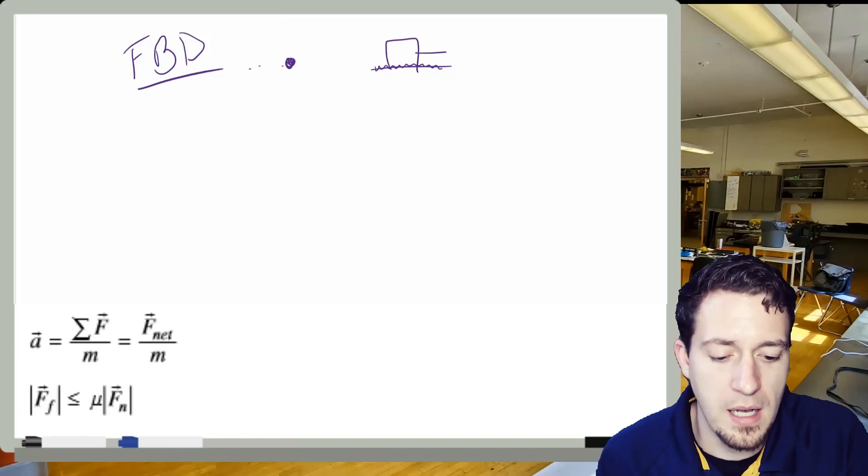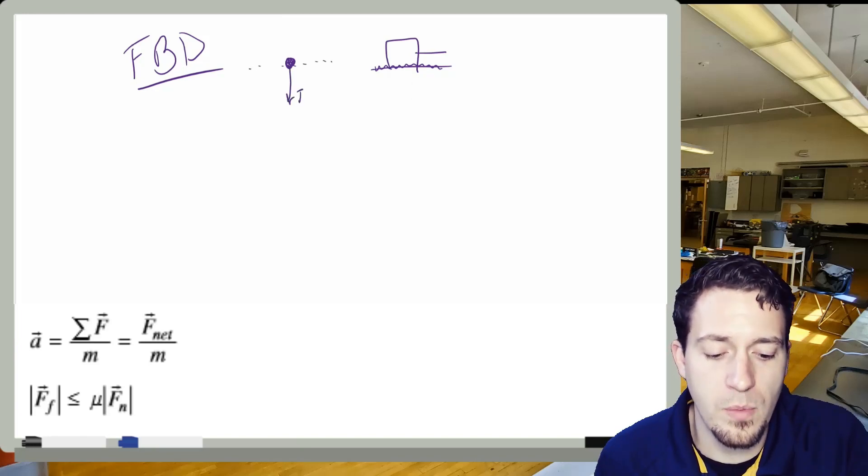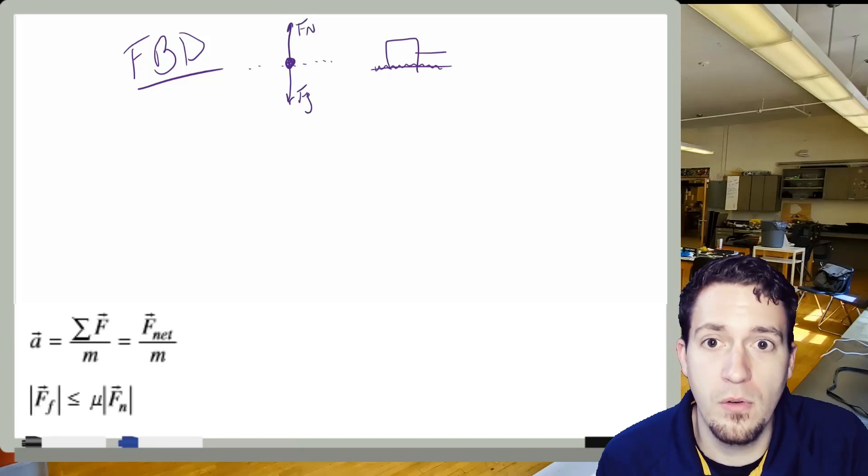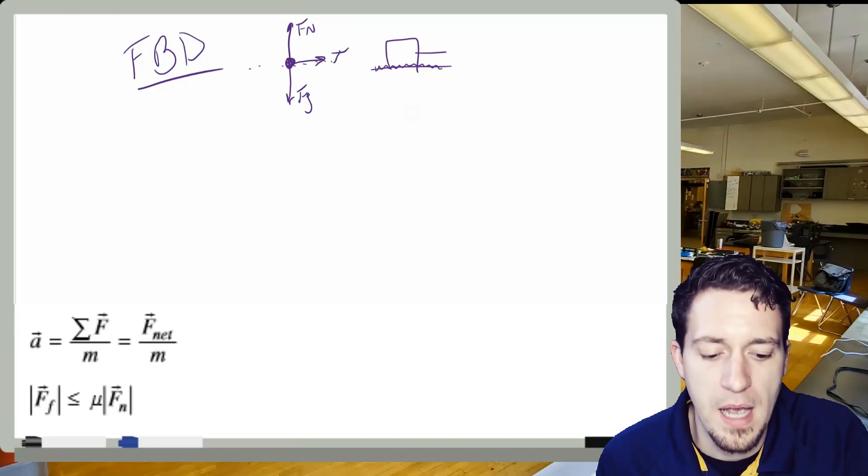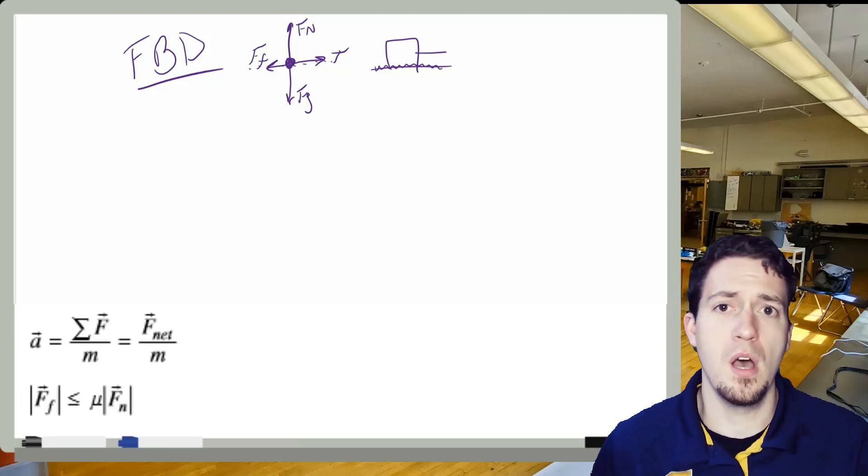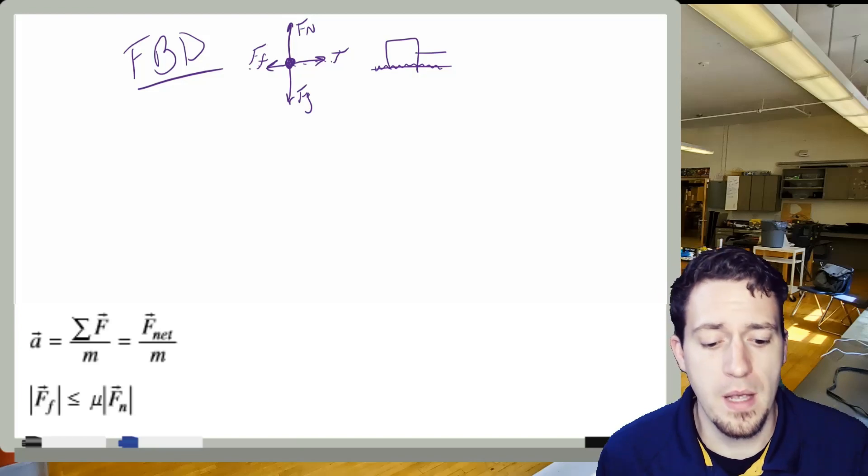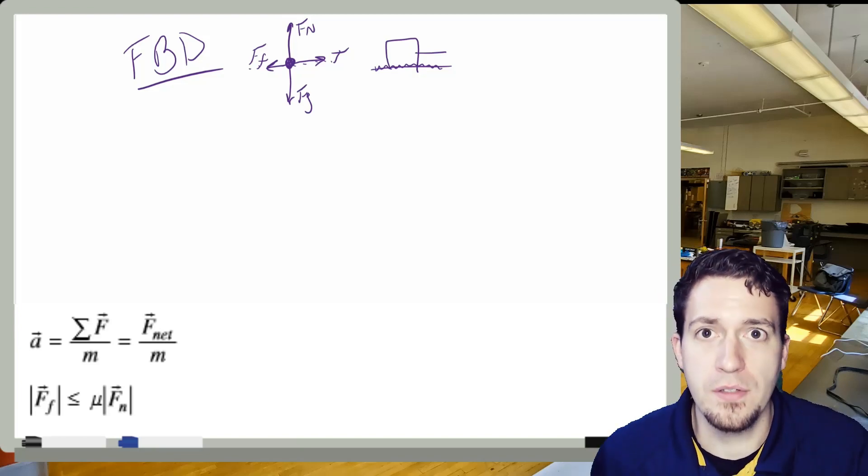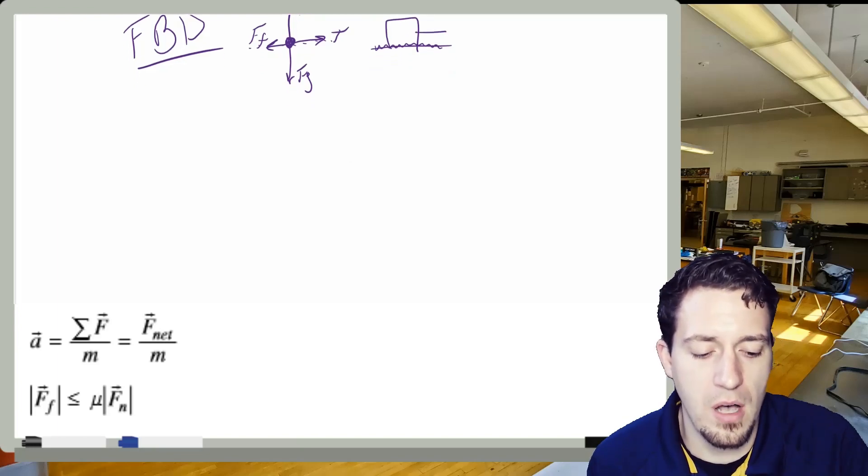I'm going to put a dotted line here in my diagram to indicate my ground. I'm going to put downward would be the force of gravity. Upward, we will have the normal force. Then this way, we would have the force of tension. Then back this way, we would have the force of friction. Remember, we're identifying those forces off of names that we would commonly call them, how we would refer to them.